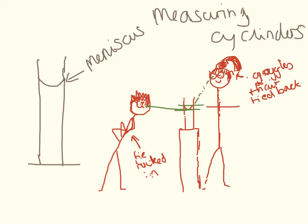A common mistake that people make when using measuring cylinders is not looking in the correct place. This is the meniscus of the liquid in the measuring cylinder. If you're standing up when you look at it, you're actually going to be reading it at a higher level than if you get down to eye level with the meniscus, and this could be a source of error in your experiments.